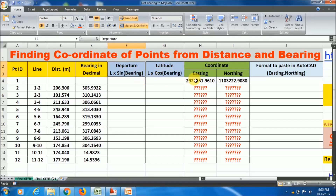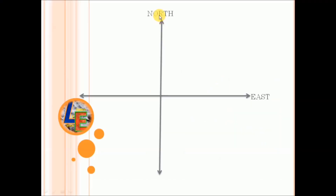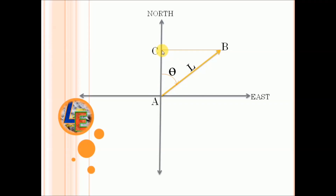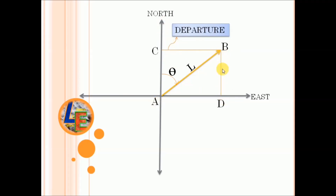Here is a simple concept. This is the north line and this is the east line — this is the origin. Our survey line AB has a bearing calculated from the north line towards the survey line in a clockwise manner. If the length of the line is L, then BC will be the departure, which is parallel to the east line, and BD will be the latitude, which is parallel to the north line.